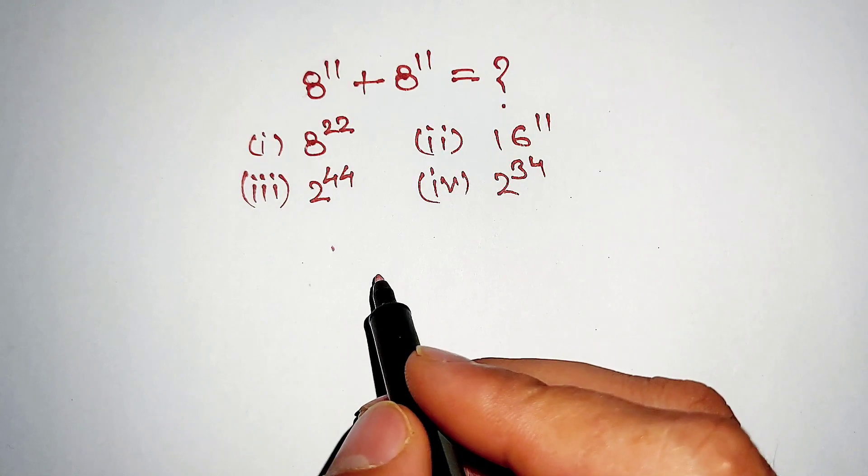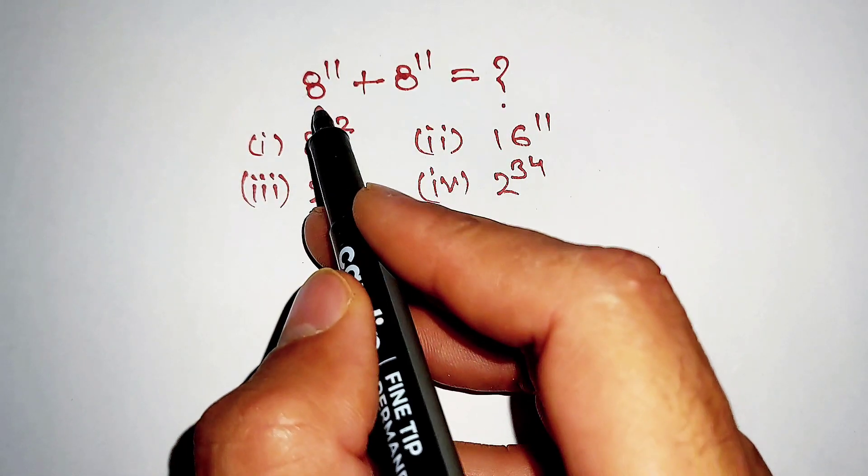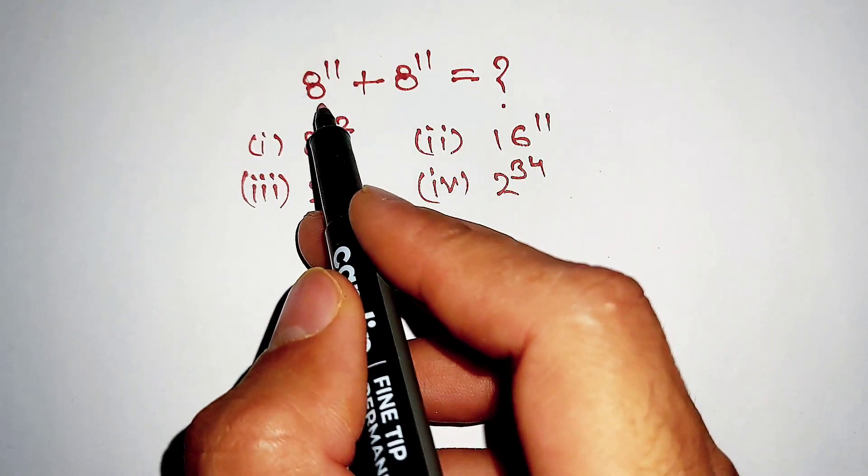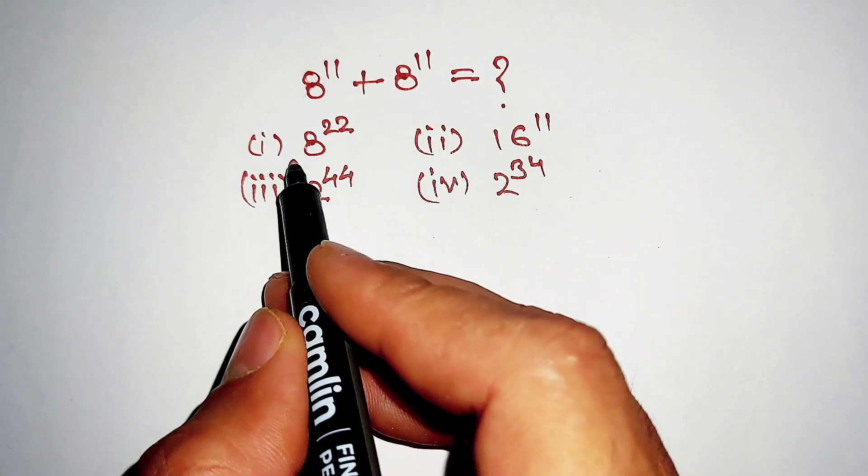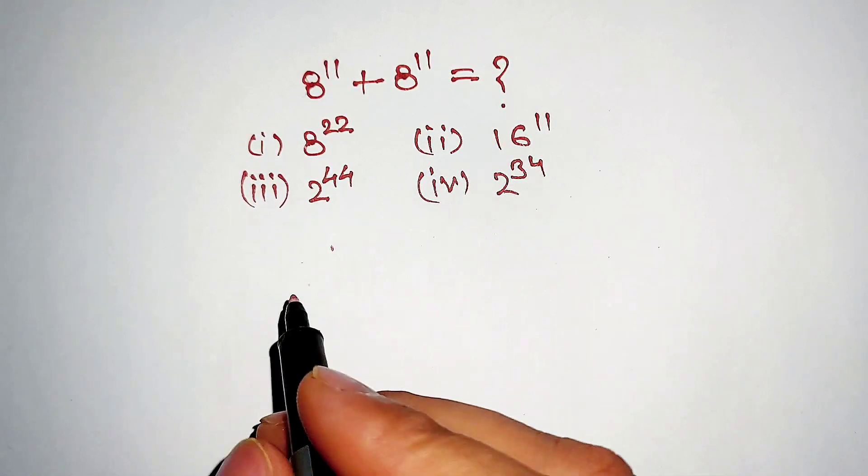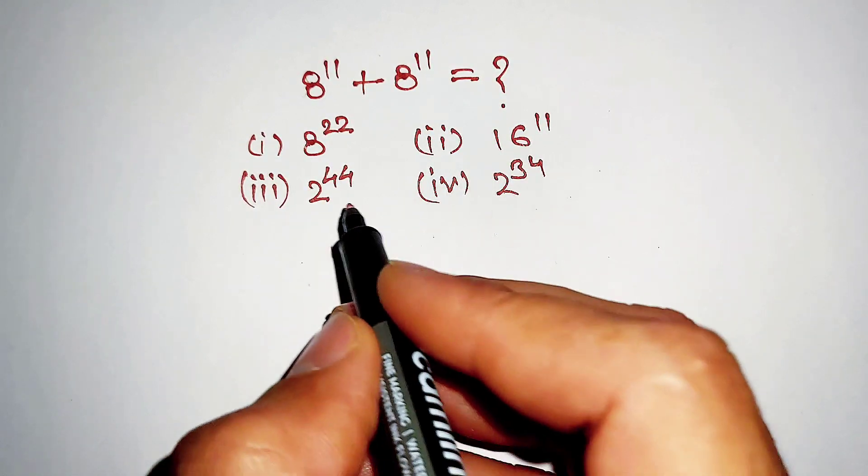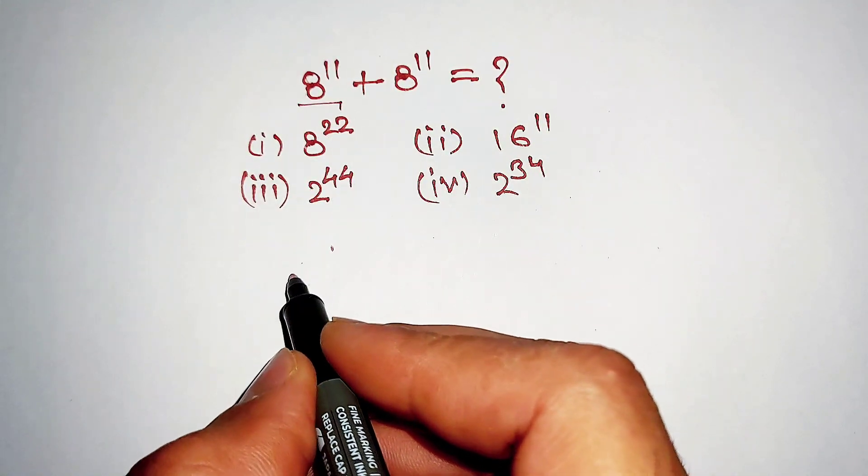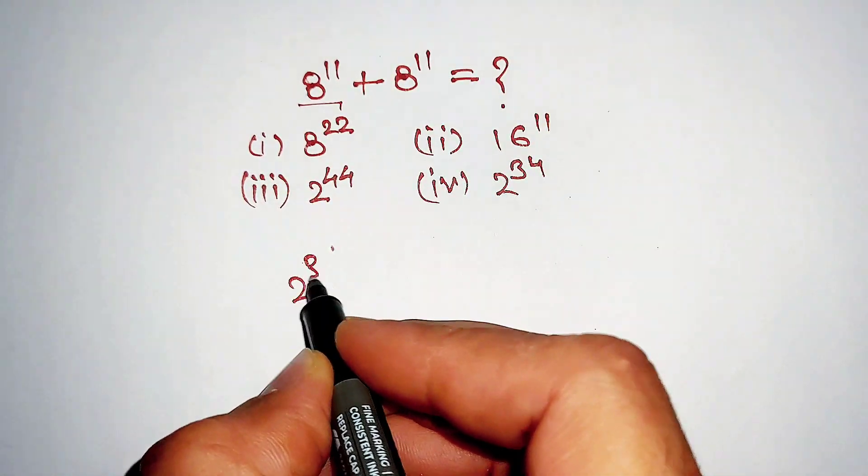Hello dosto, here is the question: 8 power 11 plus 8 power 11. We have to find the value of this, and here are the options. Now first of all, we can write this 8 as 2 power 3.